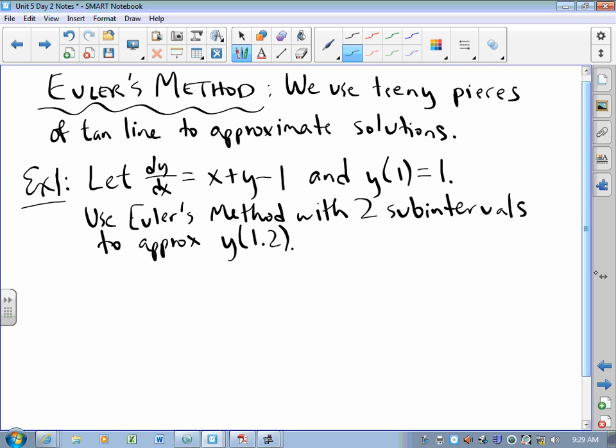So in an Euler's method situation, you know what the derivative is. It's very hard to solve for y explicitly. You know where we are when x equals 1, and we want to know where we are at x equals 1.2.